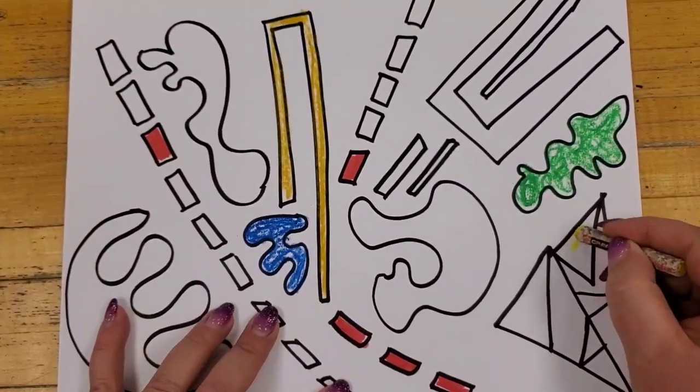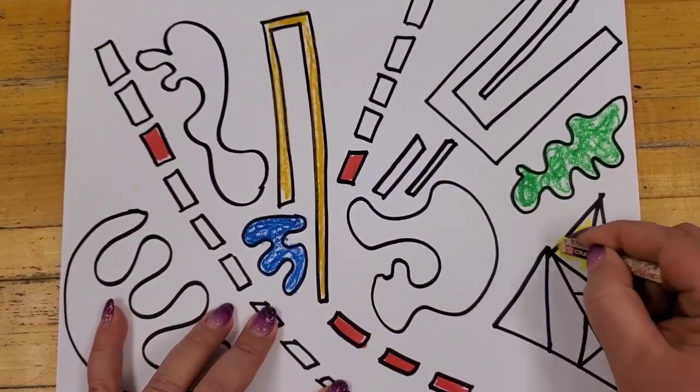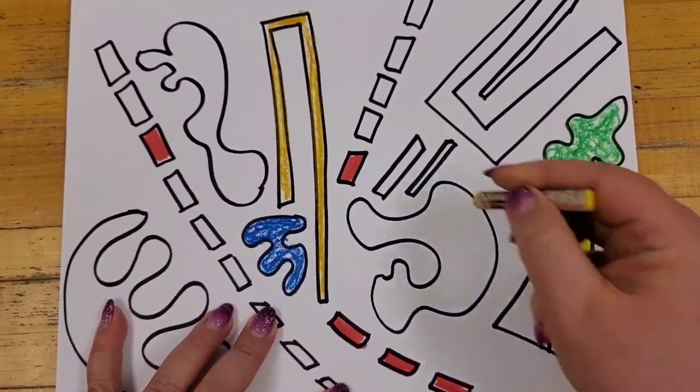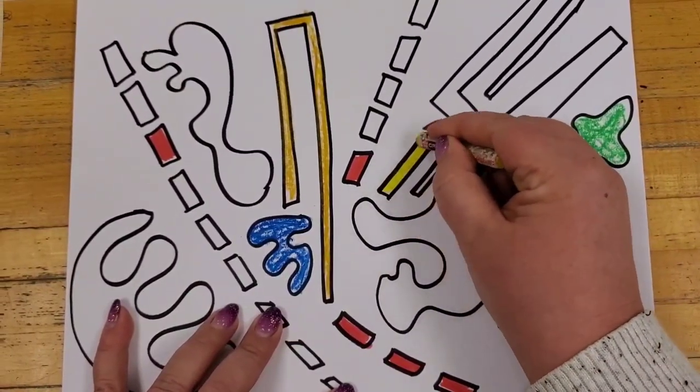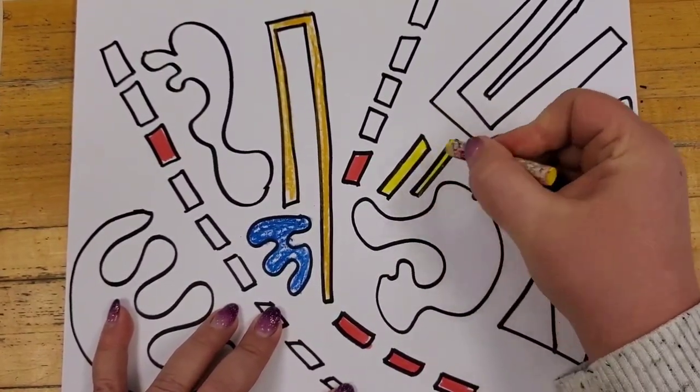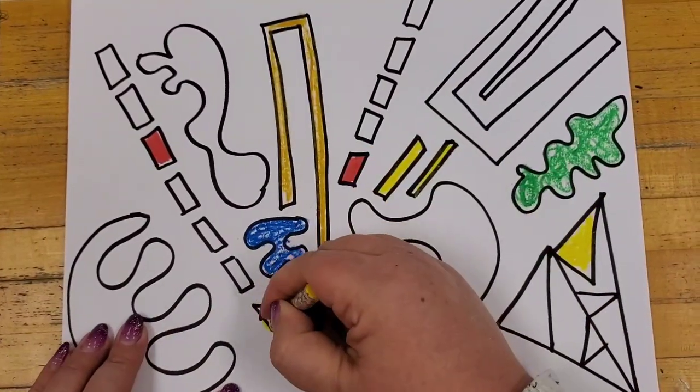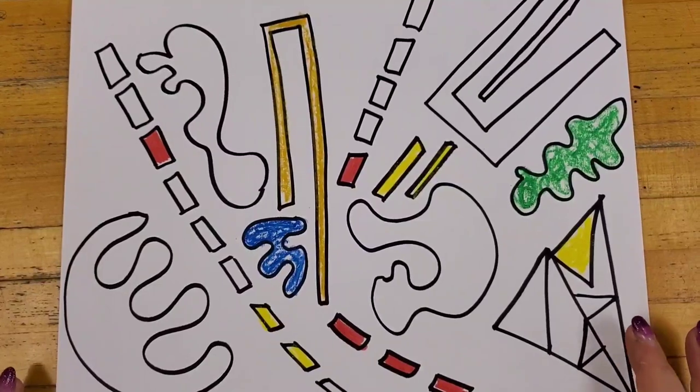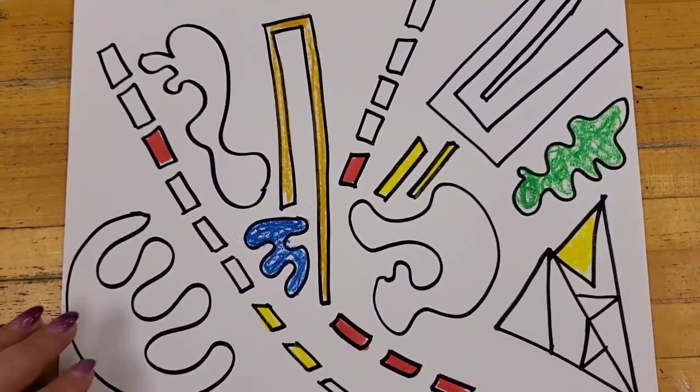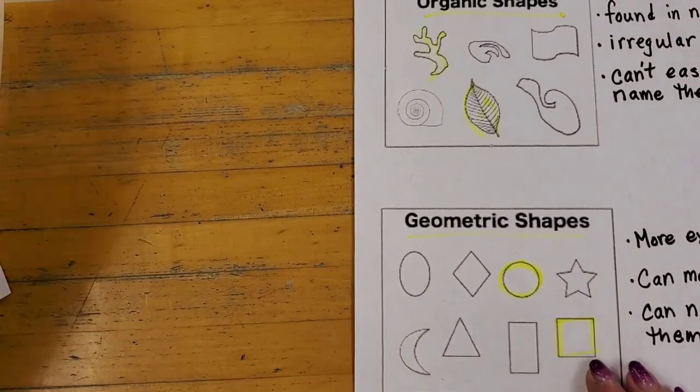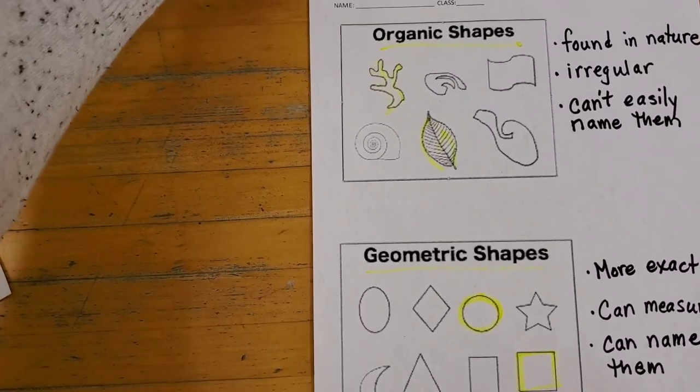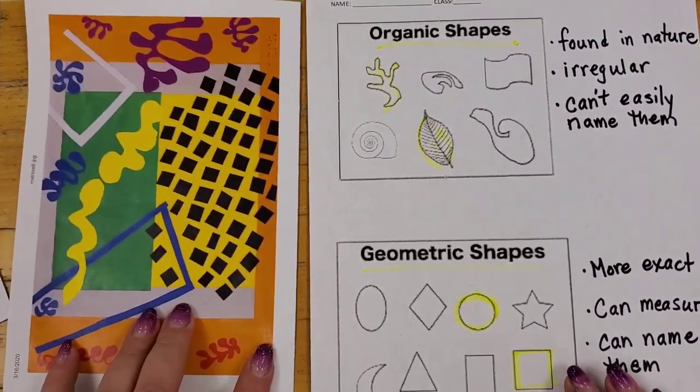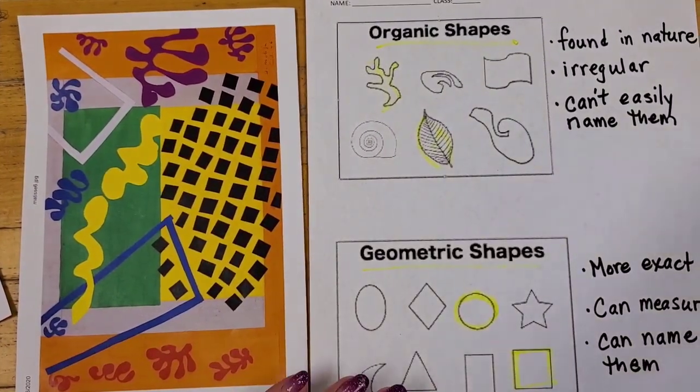I'm just now coming back in with some color. I happen to have some oil pastels here but again you could do whatever you have on hand. Maybe it's just a black and white drawing, depends on what you have. Either way you'll be able to draw and explore both organic and geometric shapes and the work of Matisse.